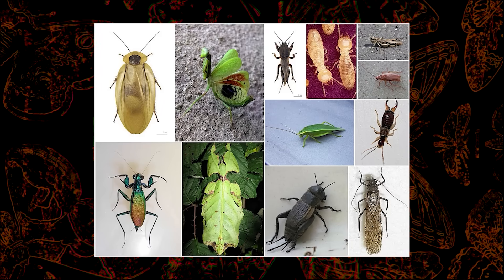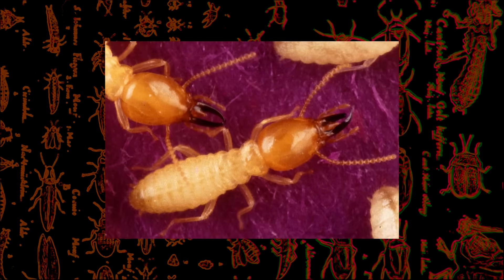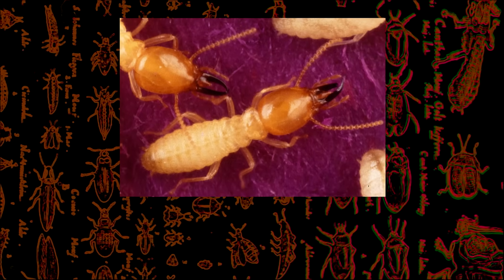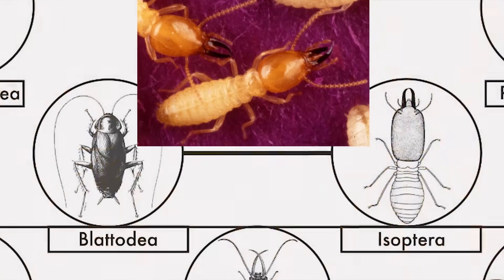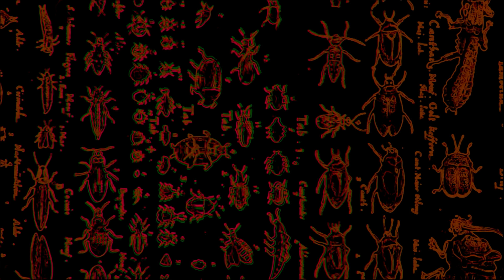Technically, termites belong in the order Blattodea, as they are direct genetic descendants of cockroaches. But their lives are so complex that I decided to cover them in a separate future video.